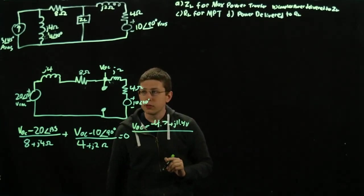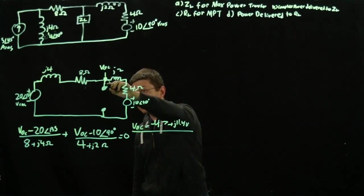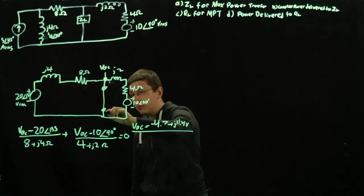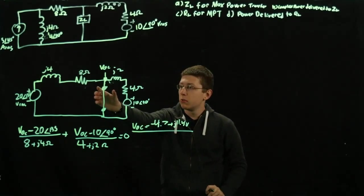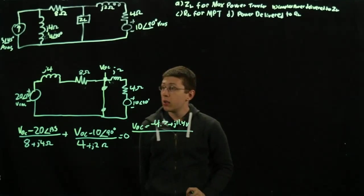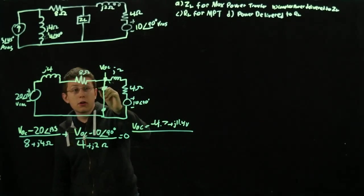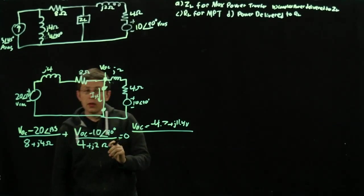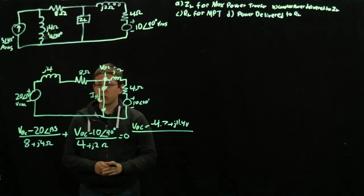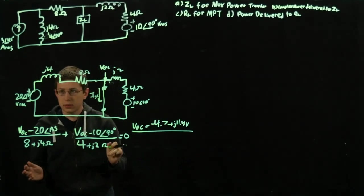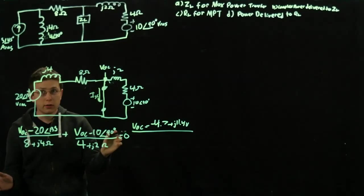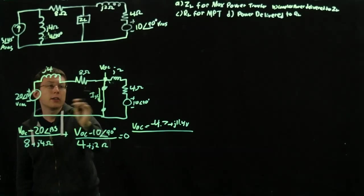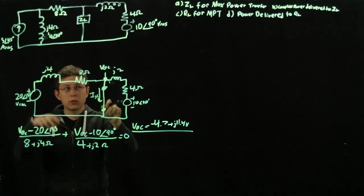Now we're going to short these terminals. I'm not going to redraw it, we just replace the open with a wire and try to find this current flowing down here, ISC. To find this is arguably even easier than before. It's just V equals IR, so V over R equals I. We see there's two voltage sources, so it'll just be two terms. There's not even any algebra to be done, just division.